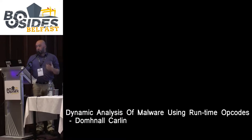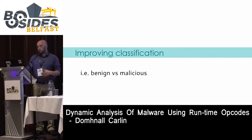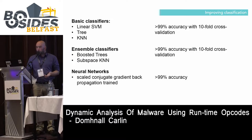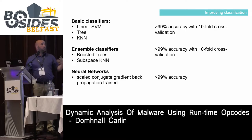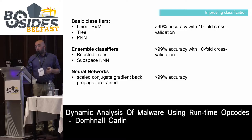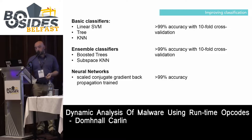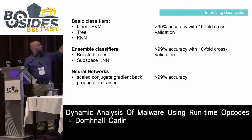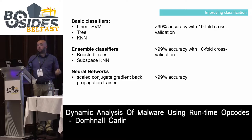We're working on improving classification — benign versus malicious. Using basic classifiers including a linear support vector machine, decision trees, and k-nearest neighbors, we've achieved over 99% accuracy — 99.8% accuracy discriminating benign from malicious software. Ensemble classifiers such as boosted trees and subspace k-nearest neighbours give roughly the same with ten-fold cross-validation. A scaled conjugate gradient backpropagation-trained neural network also achieves 99% accuracy. These solve different problems: for example, the neural network trains once but can add a new sample within milliseconds.